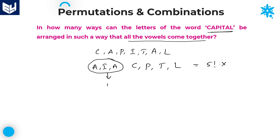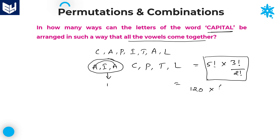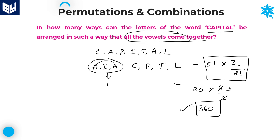These 5 units can be arranged in 5! ways. Within the single entity, the 3 vowels (A, I, A) can be arranged in 3! ways, but since A is repeated twice we divide by 2!. So the total = 5! × (3! / 2!) = 120 × 3 = 360. The required answer is 360 ways. I hope you enjoyed the session — thank you very much for watching.